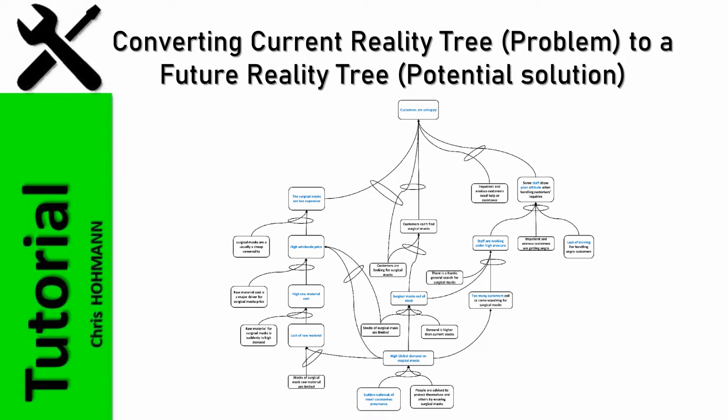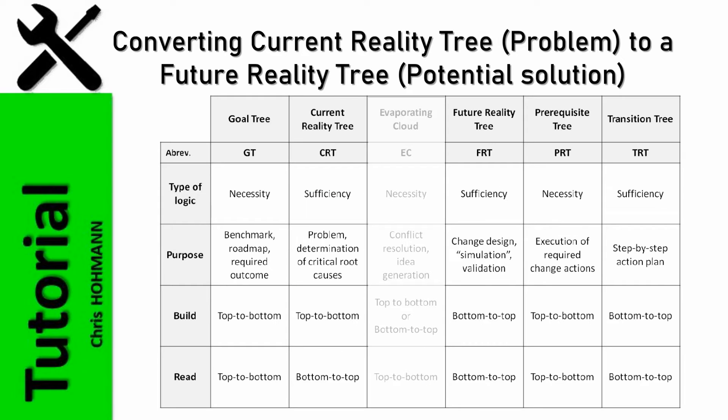Yet achieving a robust, logically sound current reality tree is only half the way to solving the problem. The next step in the logical thinking process is to build a future reality tree.